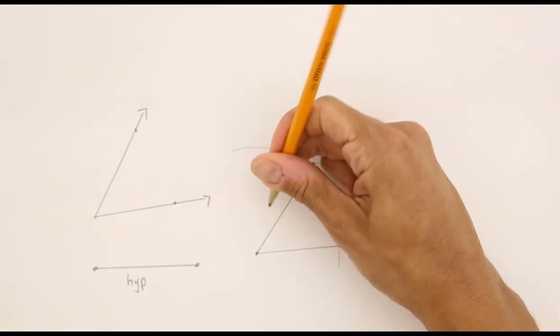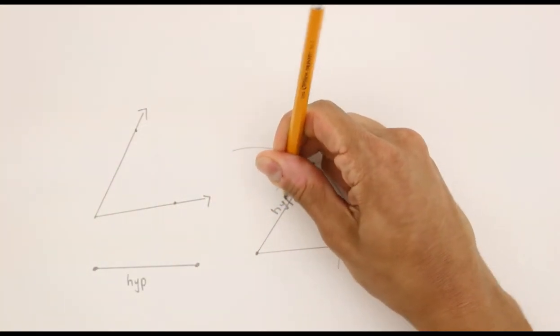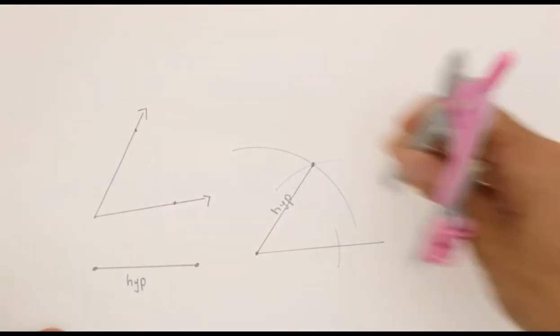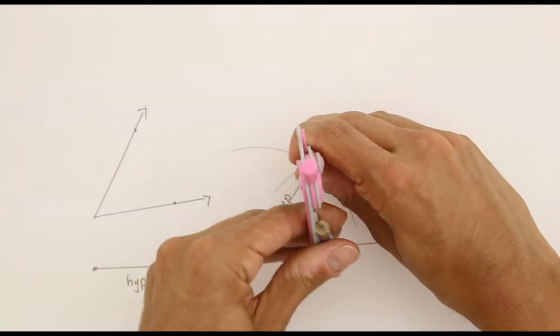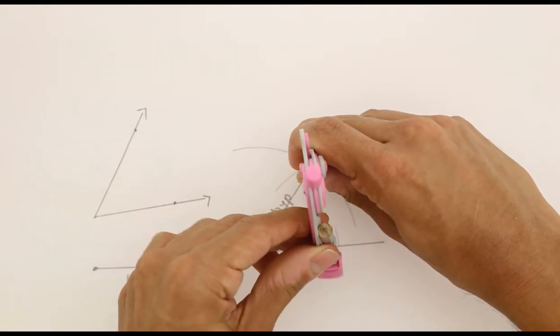However, we do not have a guaranteed right angle yet. So now what we have to do is open up our compass at the point at which the hypotenuse intersected with the other arc.